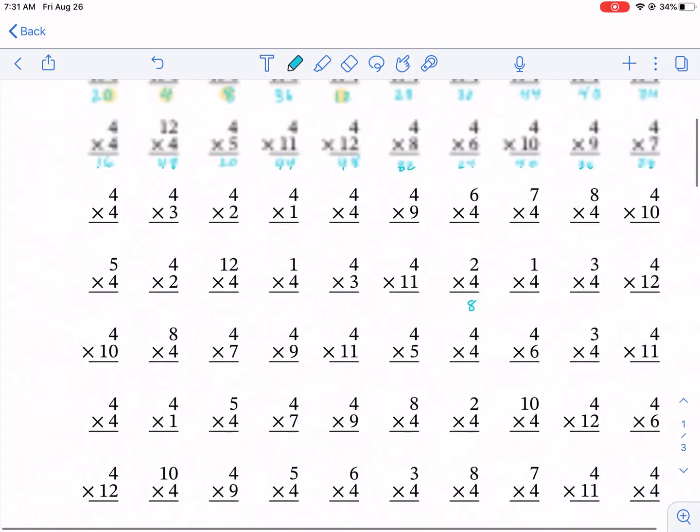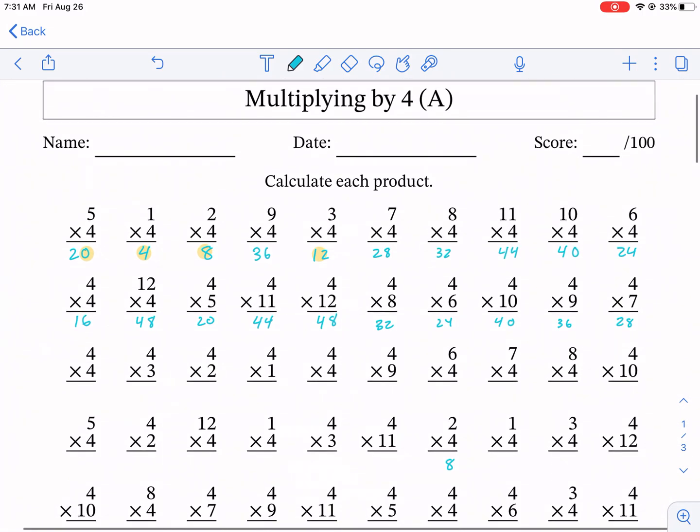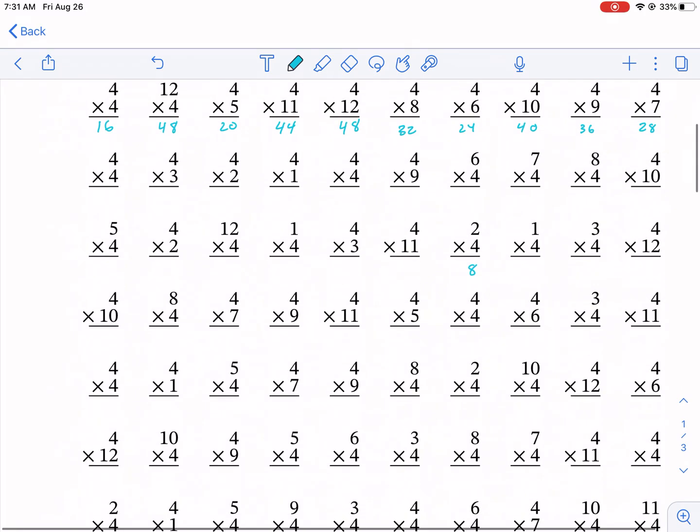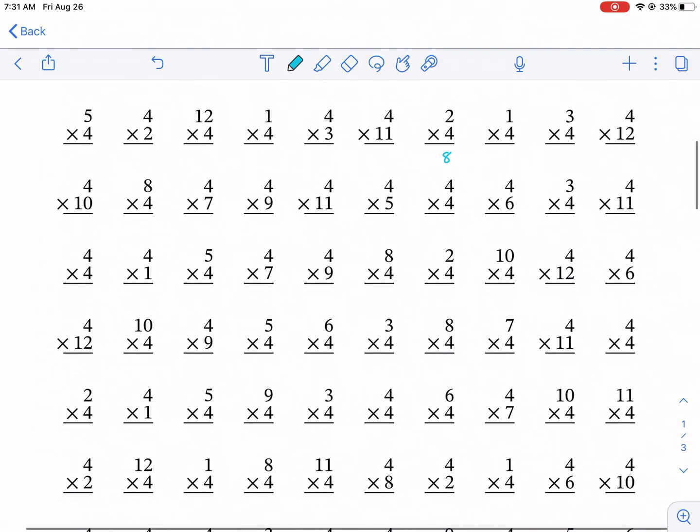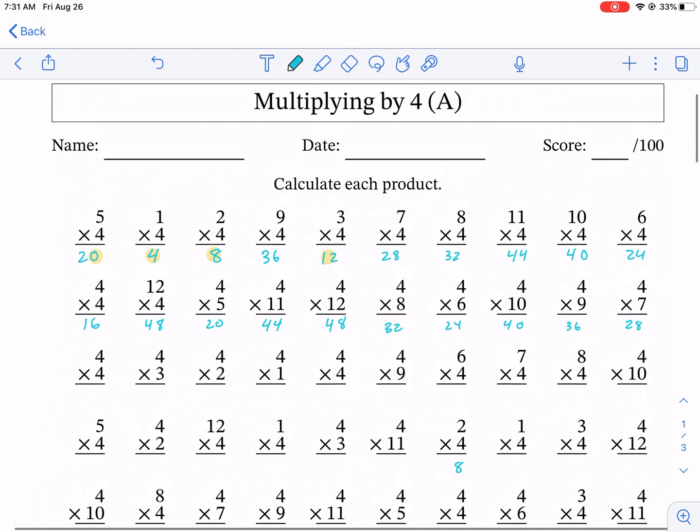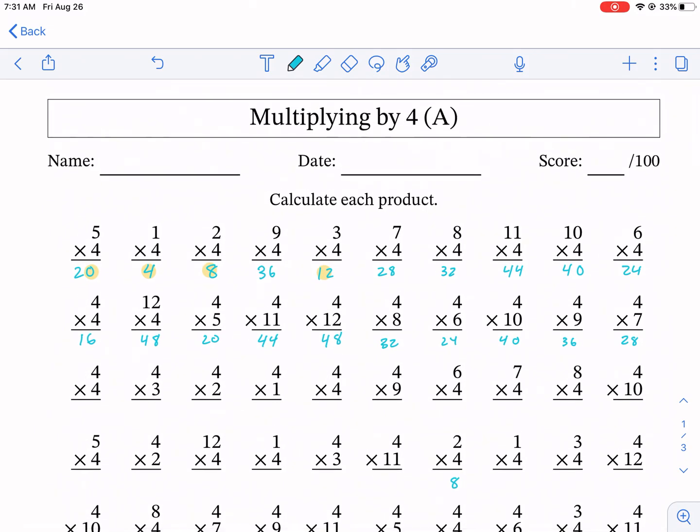So my suggestion is print this worksheet out, go ahead and do it. Maybe don't even do it for time. Print it out again, do it for time this time. See how fast you can do it. And then the more times you do it, the better you're going to get at it. And again, start with writing them all out. Just knowing that the multiples is half the battle. Either way, if you want to see more videos like this, make sure to come back right here on West Explains Best. See you next time.